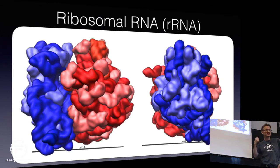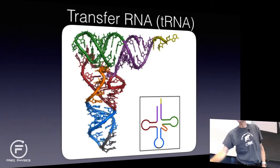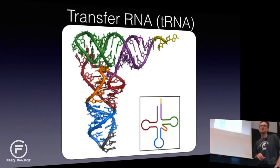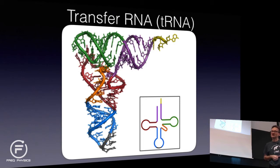There is transfer RNA that is used when moving the small building blocks that will help us build proteins. We're starting to have lots of different molecules, and the place where all of these molecules are used is when we build proteins.